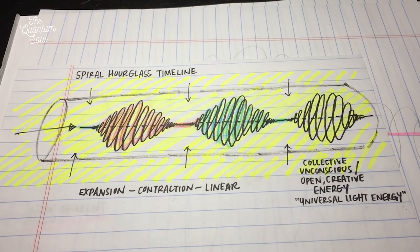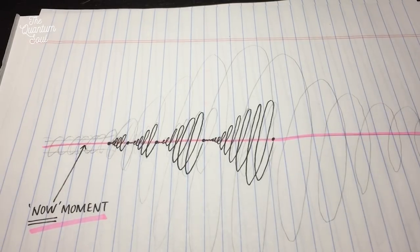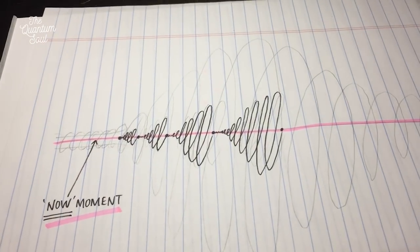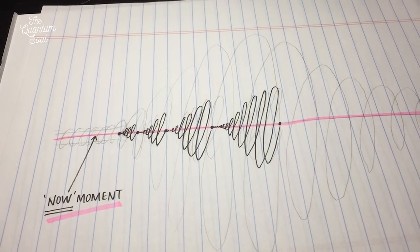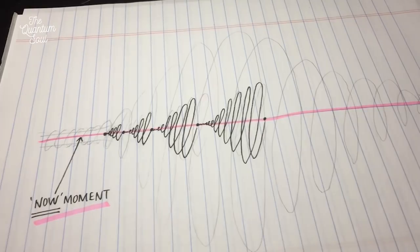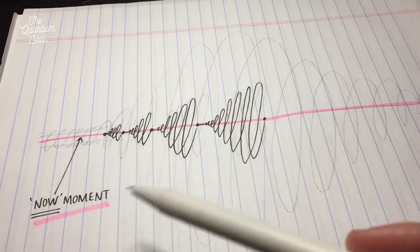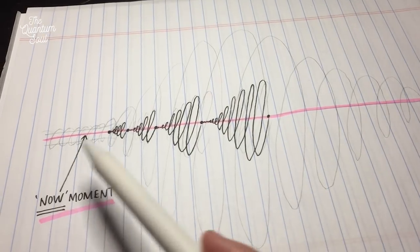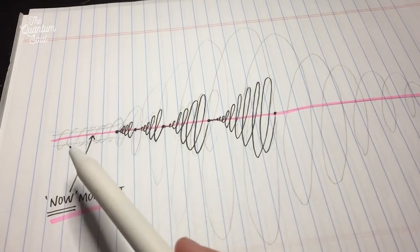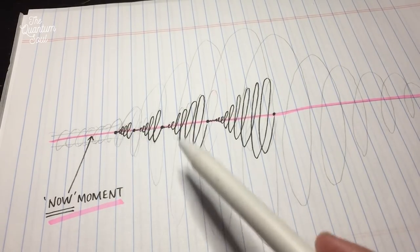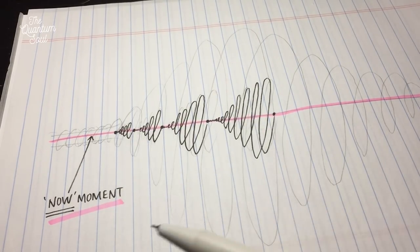As you can see, it's like that linear now moment as well as the spirals, and it also connects to this diagram that I drew with the now moment, the collective spiral timeline, the linear timeline portal, and the individual spiral timelines within the collective spiral timeline.